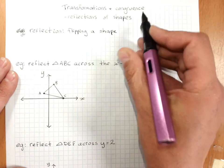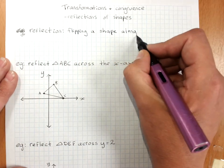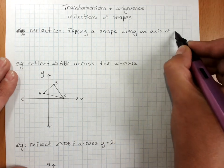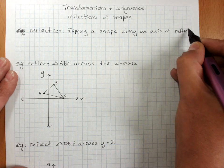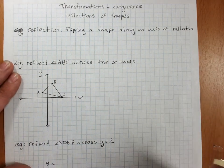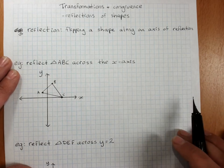And we flip the shape along an axis of reflection. And that axis of reflection is like a mirror, and we're making a mirror image with that axis being the mirror.